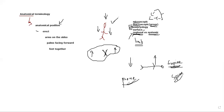Everything in anatomical terminology has an opposite — if you know one term, the other is easy. If supine is lying on your back facing up, the opposite is prone — lying on your stomach. Don't try to cram anatomical terms; find something that will help you remember. Cramming won't help you in any way.